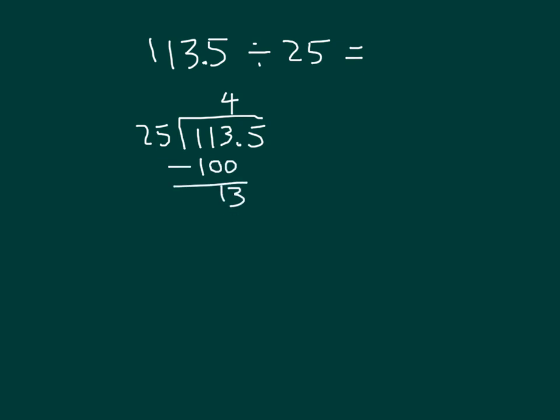I bring down the 5 because now I'm working with the tenths place. I regroup those 13 ones with the tenths. Those 13 ones was worth the 130 tenths with the 5 tenths is the 135 tenths and that's what I'm dividing here for that tenths place. 135 divided by 25 will give us 5 because 5 times 25 is 125. 135 minus 125 is 10.